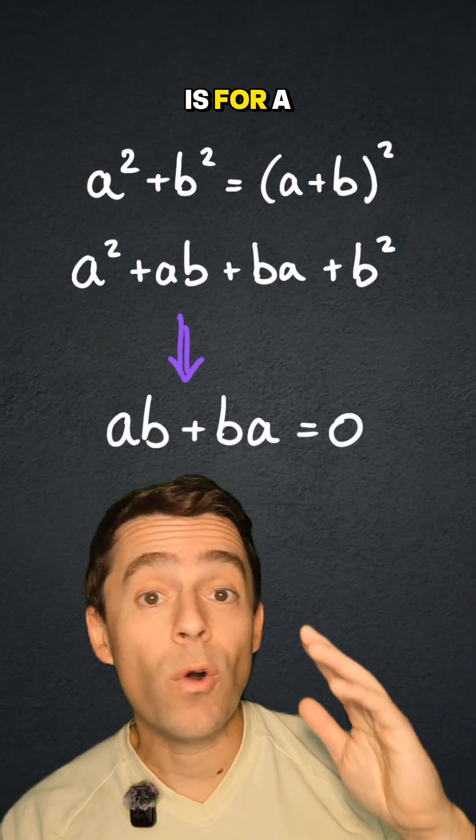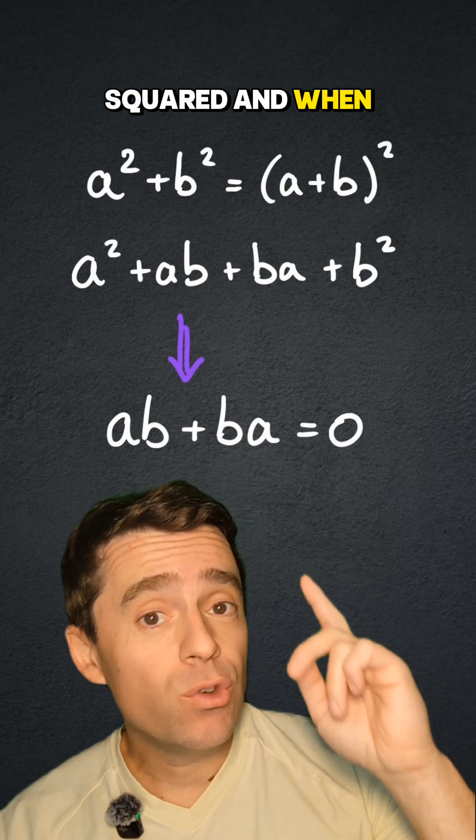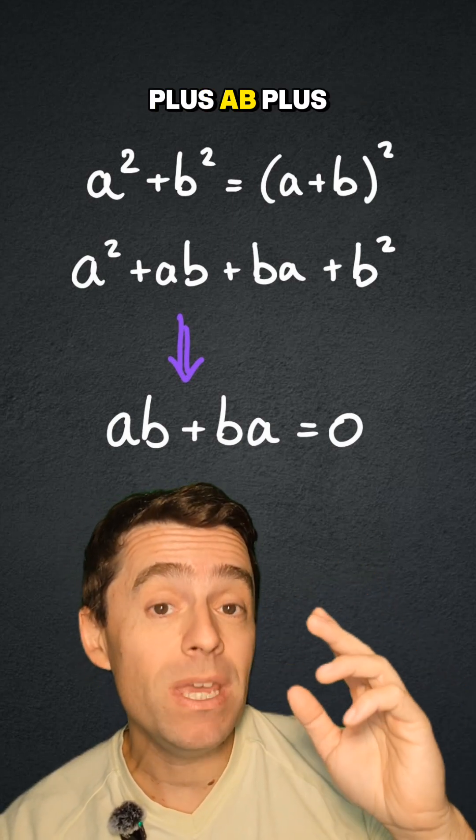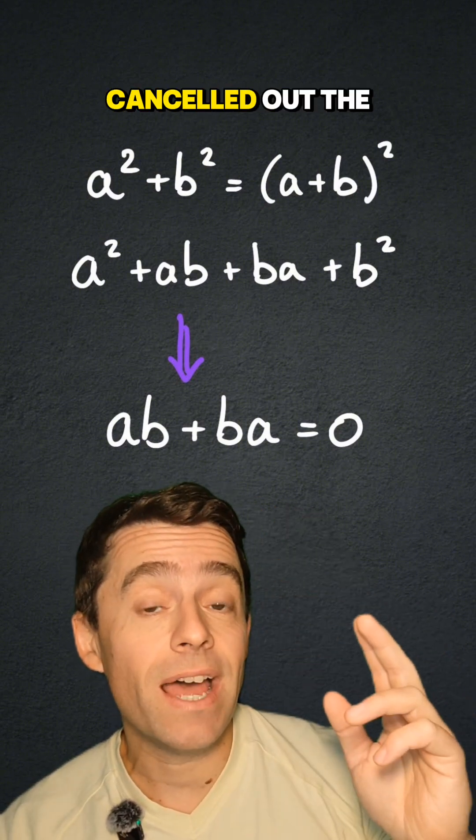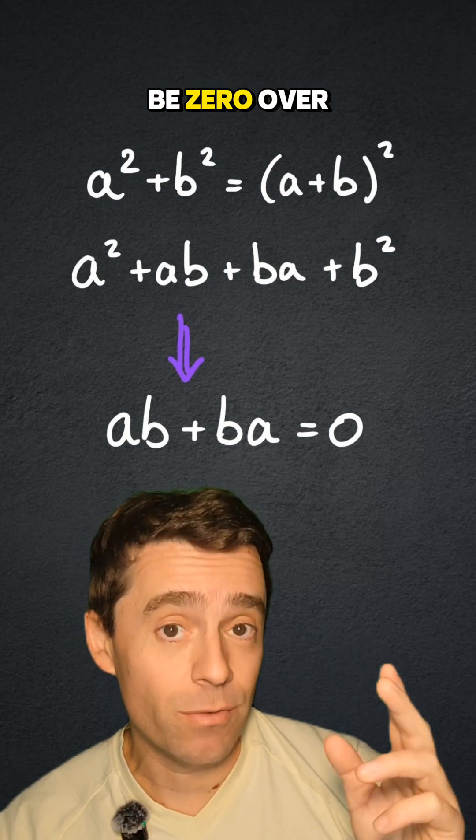What we want is for a squared plus b squared to be equal to a plus b squared. And when you expand that parenthesis, what you get is a squared plus ab plus ba plus b squared. So once you've canceled out the squares, what we need is for ab plus ba to be zero.